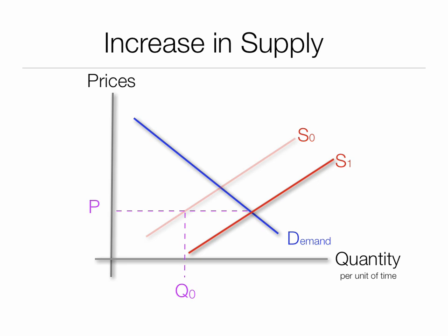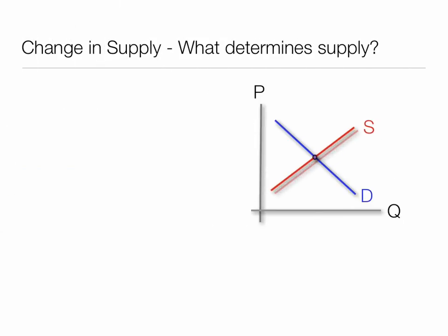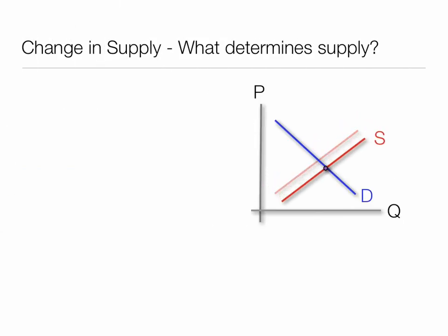An increase in supply means that the supply curve shifts downward and to the right, and at the same price, more quantity will be supplied, as you can see from Q naught to Q1. Again, we're talking about supply shifting left and right.